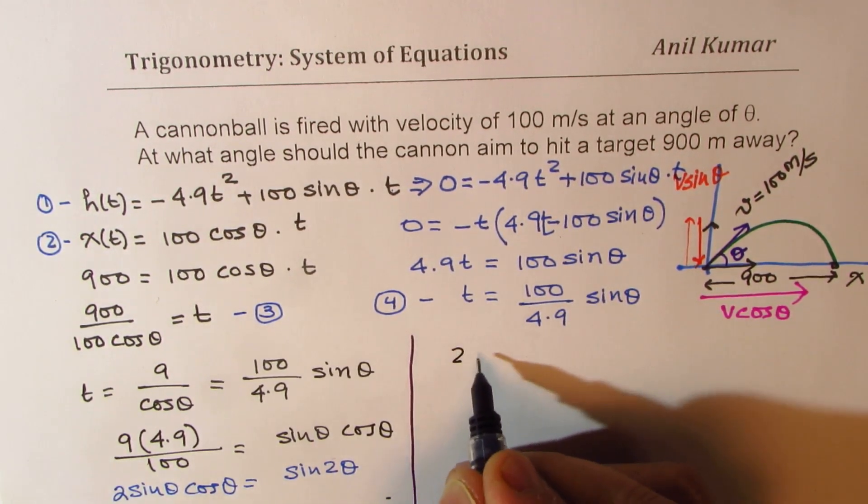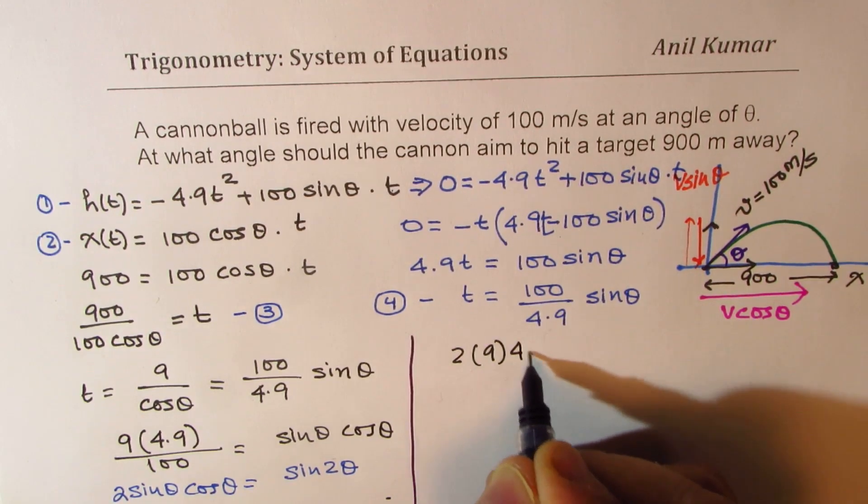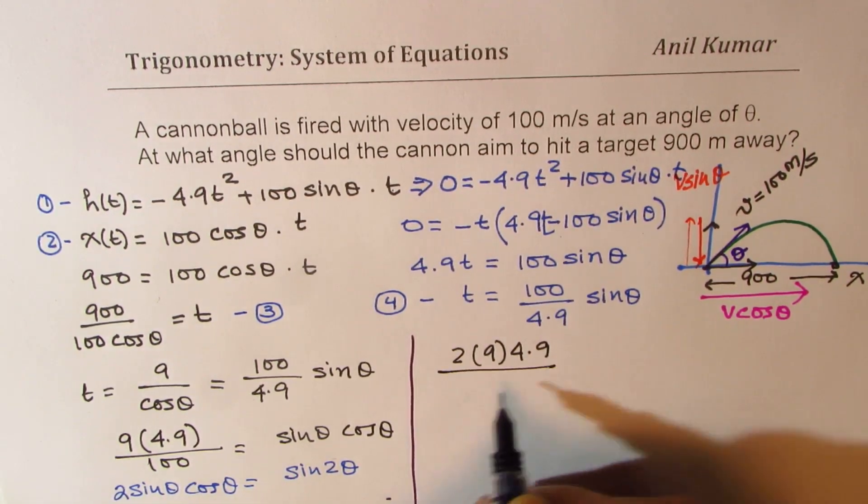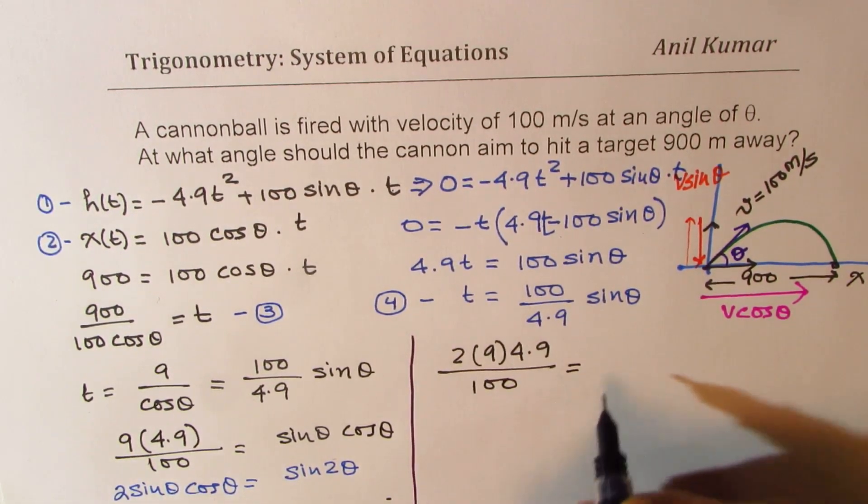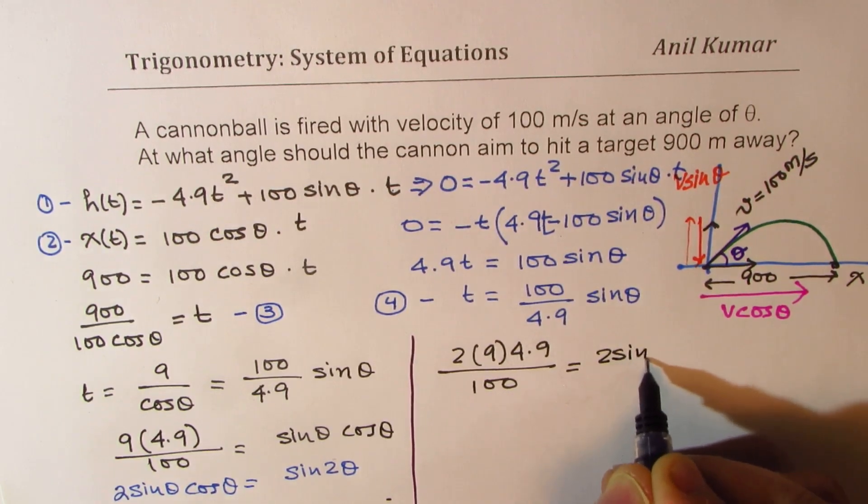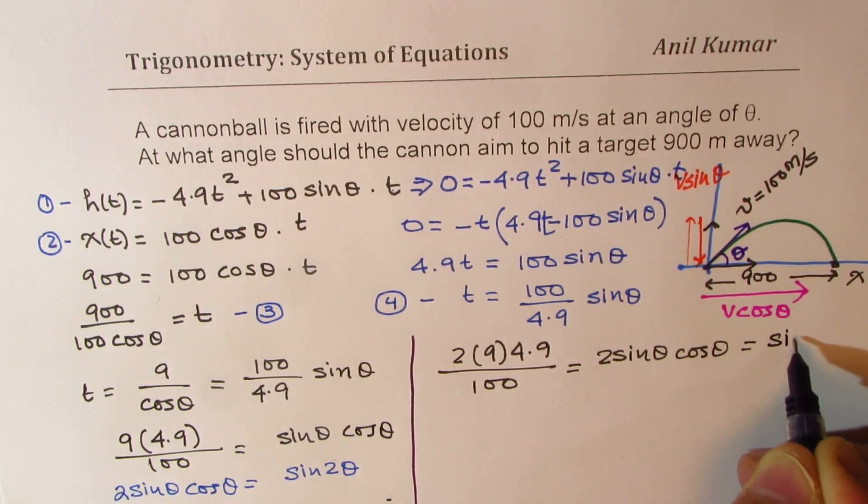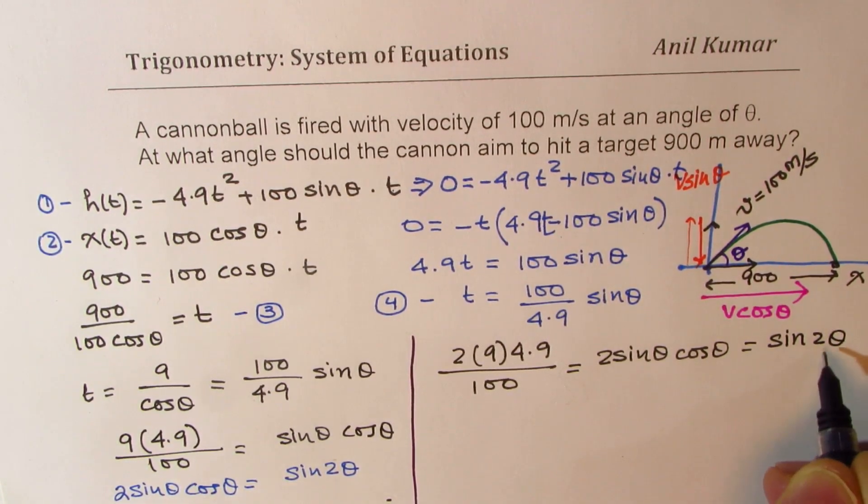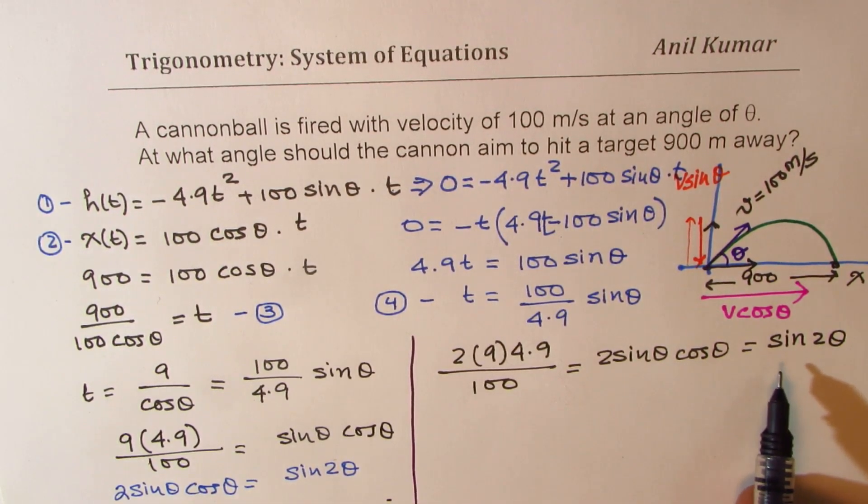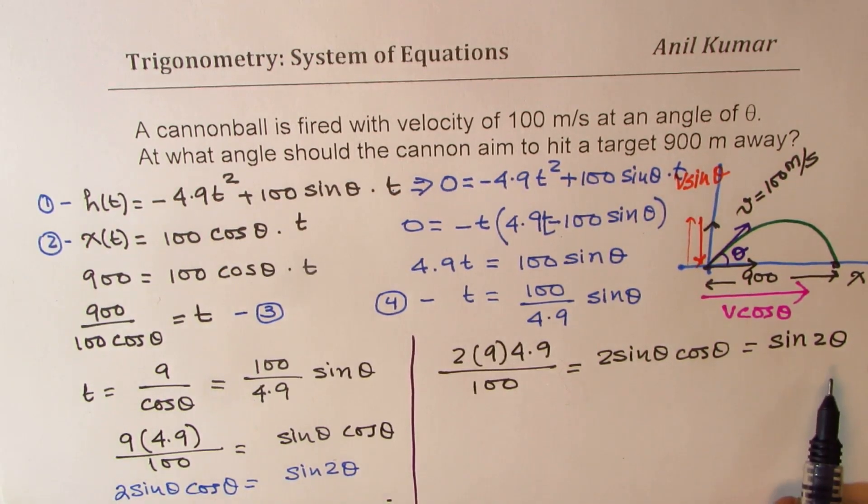So what we get here is 2 times 9 times 4.9 divided by 100 equals to 2 sin theta cos theta, which is equal to sin 2 theta, right? So we got a value which is sin, just in sin, right? The angle is 2 theta.